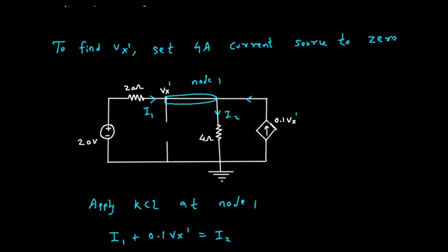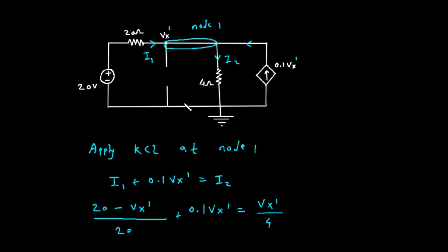The dependent source remains in the circuit, but its value will now be dependent on Vx prime, so it becomes 0.1 times Vx prime. We will apply Kirchhoff's current law, or KCL, at the node labeled node 1, where the voltage is Vx prime. KCL states that the sum of currents entering a node must equal the sum of currents leaving it. Looking at the diagram for this step, we can define the currents.